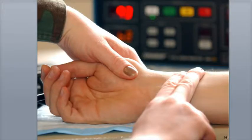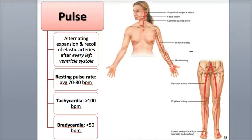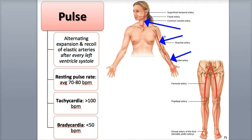Some common pulse points where pulse rate can be measured include the radial artery of the wrist, as shown here, the brachial artery of the upper arm, the common carotid artery of the neck, the facial artery of the mandible, and the superficial temporal artery near the ear.